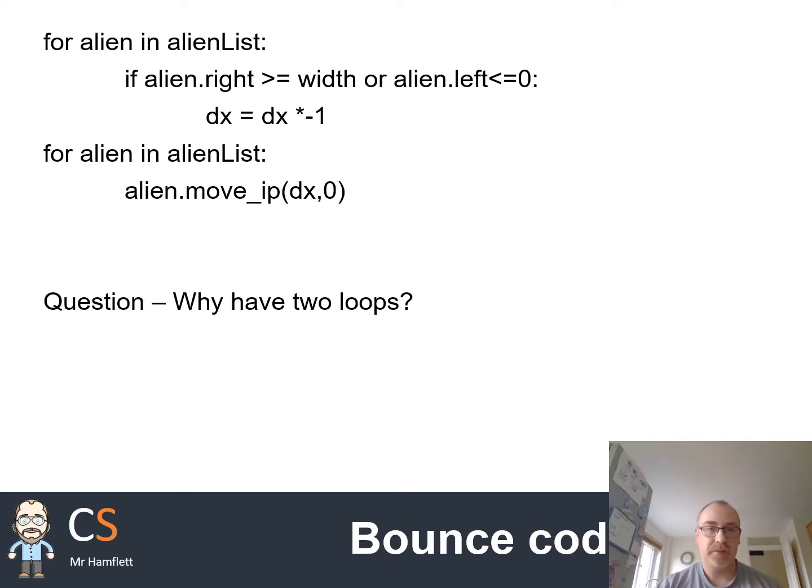Here's the code for bouncing. We've broken this down into two loops and I'll explain why in a moment. The first loop is checking to see whether the aliens have bounced on either side of the wall. The alien is a rectangle and the rectangle in Pygame has some helper attributes. Dot right and dot left are two examples. Those will give us the coordinates of the right hand side or left side of the alien.